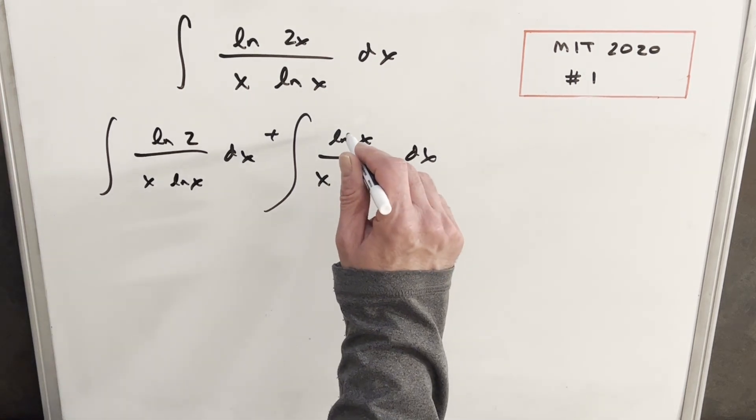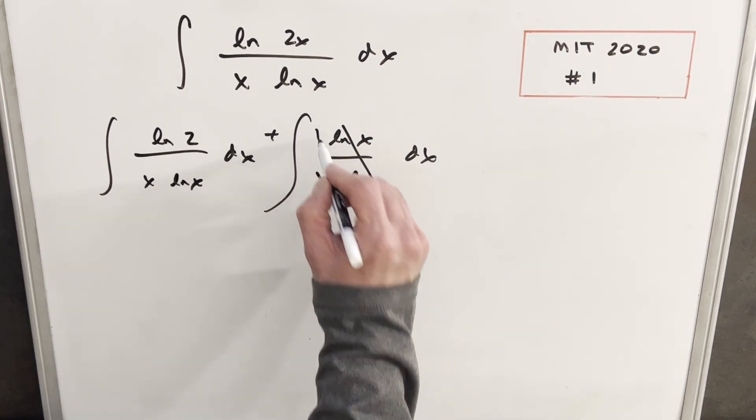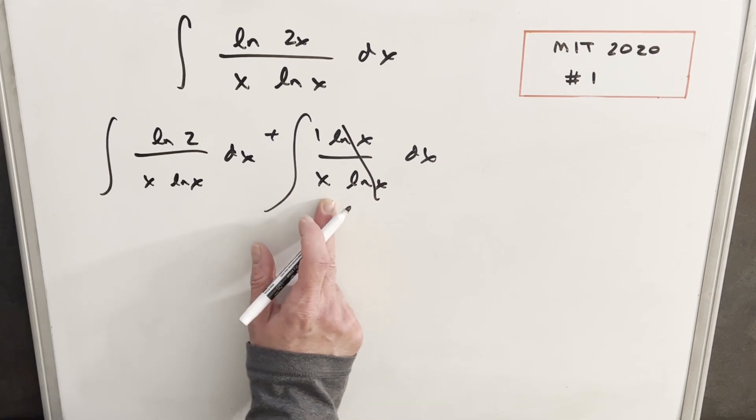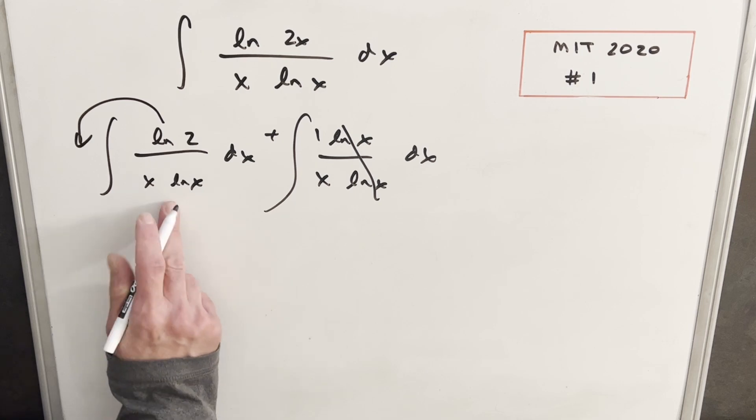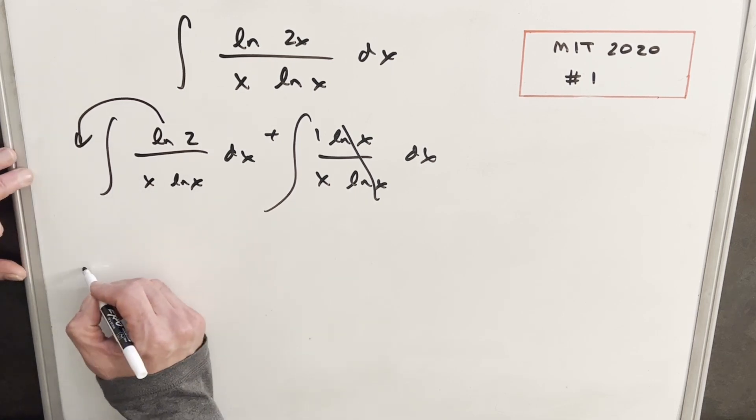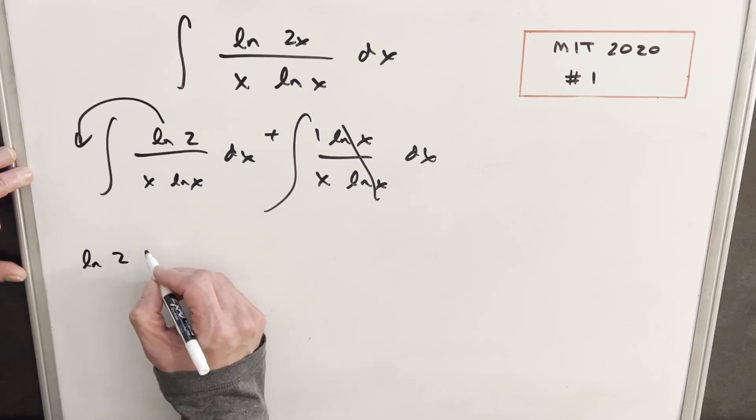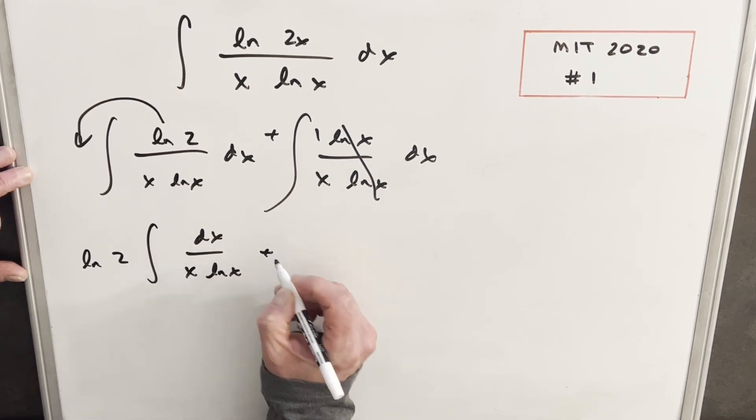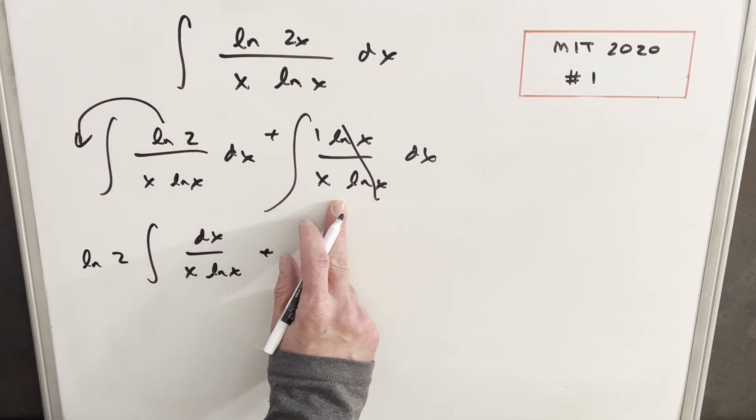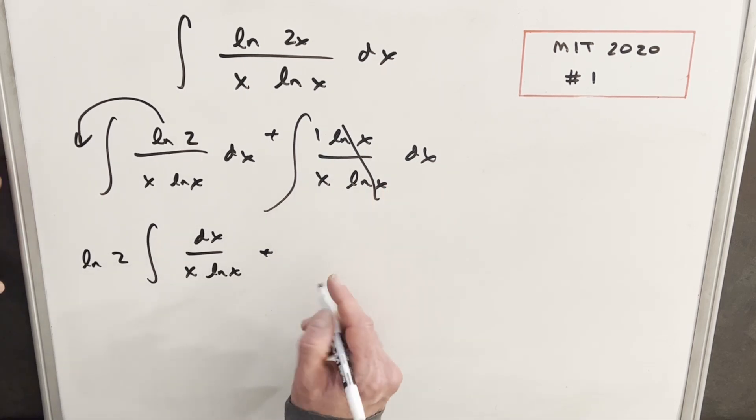Then from here, we're going to get some cancellation. ln x is going to cancel and we're just going to have 1 over x. We know what that is. Then here, if I just pull my ln 2 out front, we can use that u substitution I mentioned initially. So let's rewrite this. I'm going to have my ln 2 in front, and then we're going to have dx over x ln x plus... Now this one, we have dx over x. That's just going to be natural log absolute value of x.